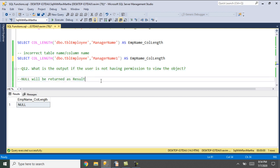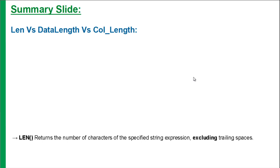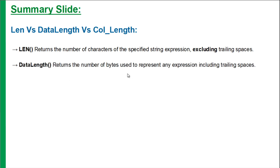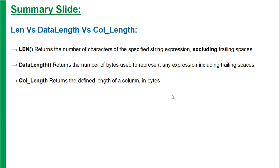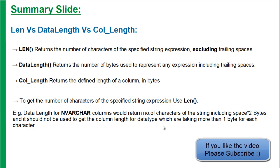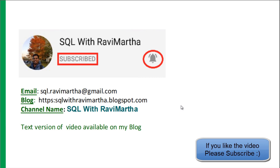This is all about length, data length, and column length. In summary: the length function returns the number of characters but excludes trailing spaces. The data length function returns the number of bytes used to represent any expression, including spaces. The column length function returns the length of a column in bytes — for nvarchar, it takes 2 bytes per character. It is recommended to use the length function to get the number of characters, keeping in mind it excludes trailing spaces. For nvarchar, data length gives characters multiplied by 2. Thank you for watching, have a good day.